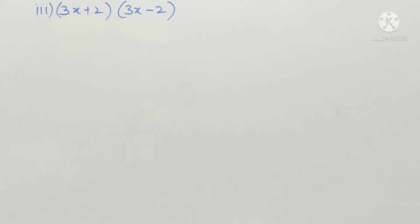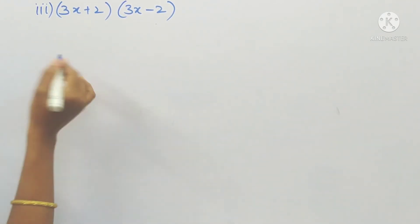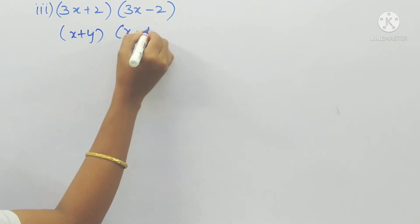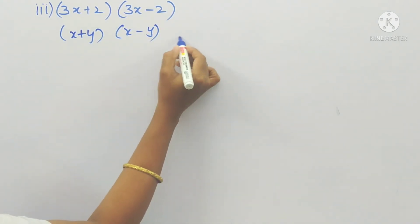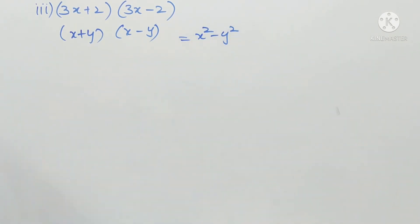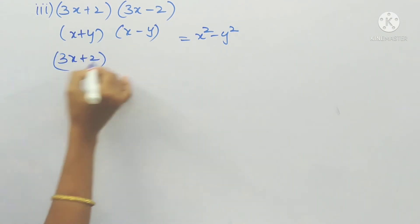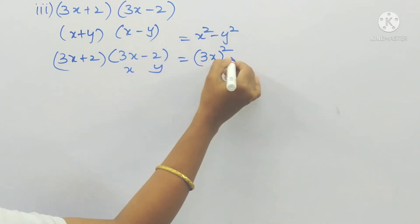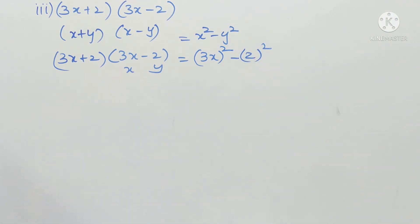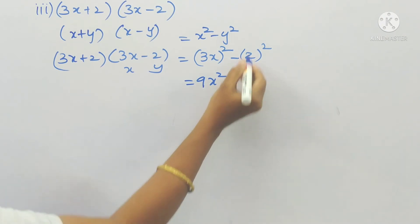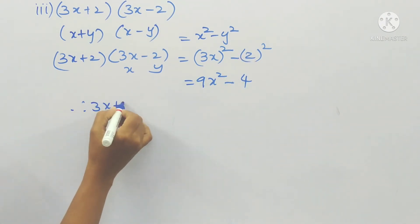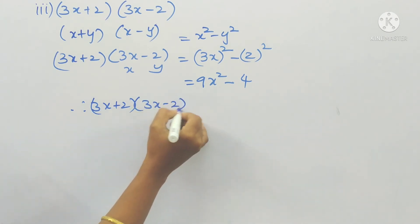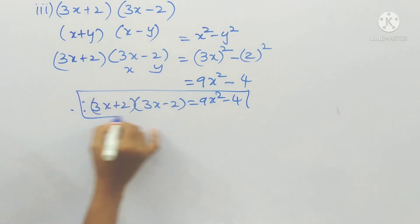Third problem: (3x + 2)(3x − 2). All algebraic identities should be in your mind. By reading this problem you can recognize it is in the form of (x + y)(x − y), whose formula is x² − y². Here x = 3x and y = 2, so we get (3x)² − 2² = 9x² − 4. Therefore (3x + 2)(3x − 2) = 9x² − 4.